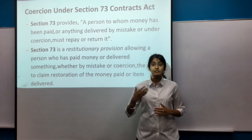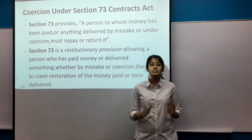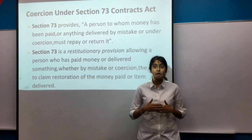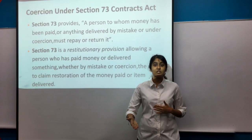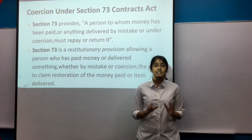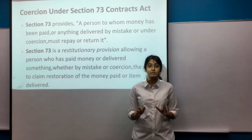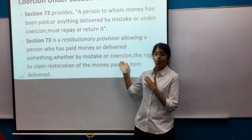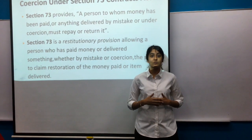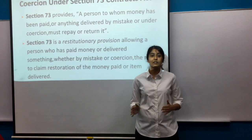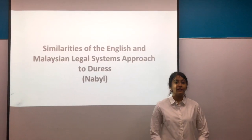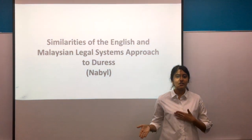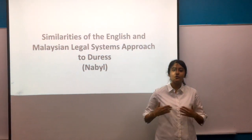Under Section 73 of the Contracts Act 1950, a person to whom money has been paid or anything delivered by mistake or under coercion must repay or return it. Section 73 is a restitutionary provision allowing a person who has paid money or delivered something — whether by mistake or coercion — the right to claim restoration. Notably, Section 73 coercion is interpreted in its general and ordinary meaning, resulting in a wider interpretation compared to coercion defined in Section 15. I will then move on to Nabil, who will show the similarities of the English and Malaysian legal systems on approaches to duress.